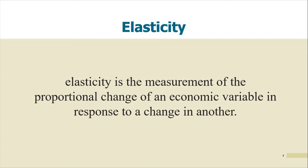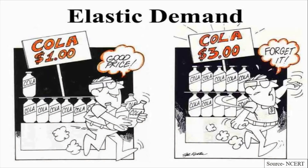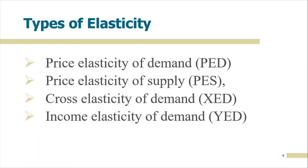Elasticity is the measurement of proportional change of an economic variable in response to a change in another variable. For example, in 2016 Coca-Cola decided to increase its price by two dollars, making it three dollars. People who were buying four or five bottles at one dollar said forget it when the price hit three dollars, because it was out of their budget. That change in quantity demanded due to a change in price is elasticity.